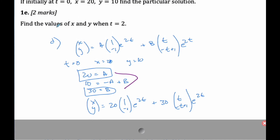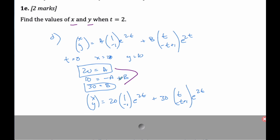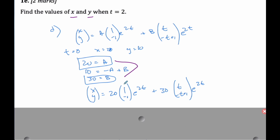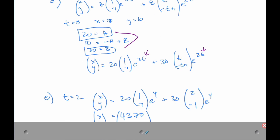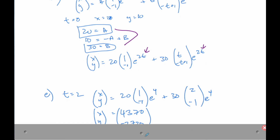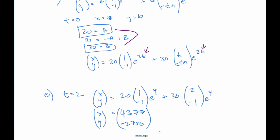Part (e) says find values of x and y when t=2. We now have our particular solution, so we simply plug t=2 in and compute — it's a straightforward calculation that gives those values.